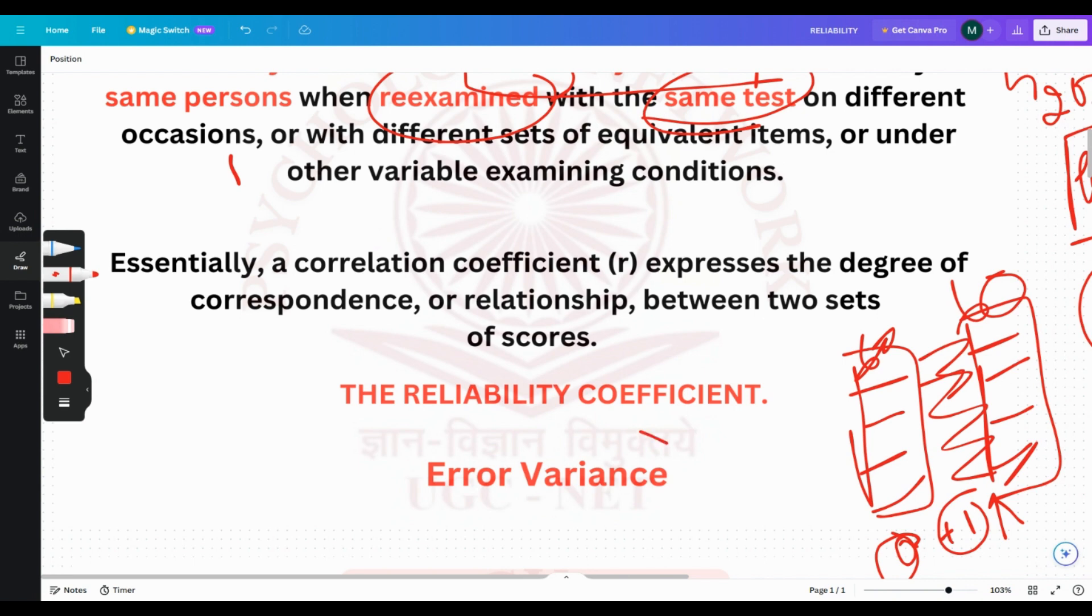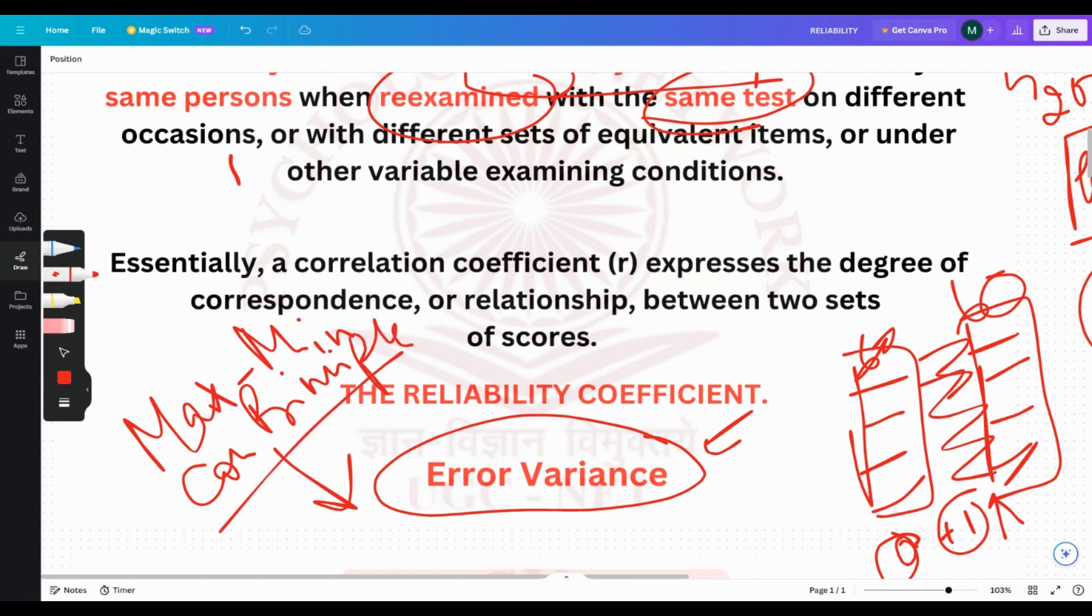The other thing you must keep in mind is error variance. We do not want error variance. I have explained the concept of error variance very properly in the Max-Min-Con Principle video. Please go check that out.